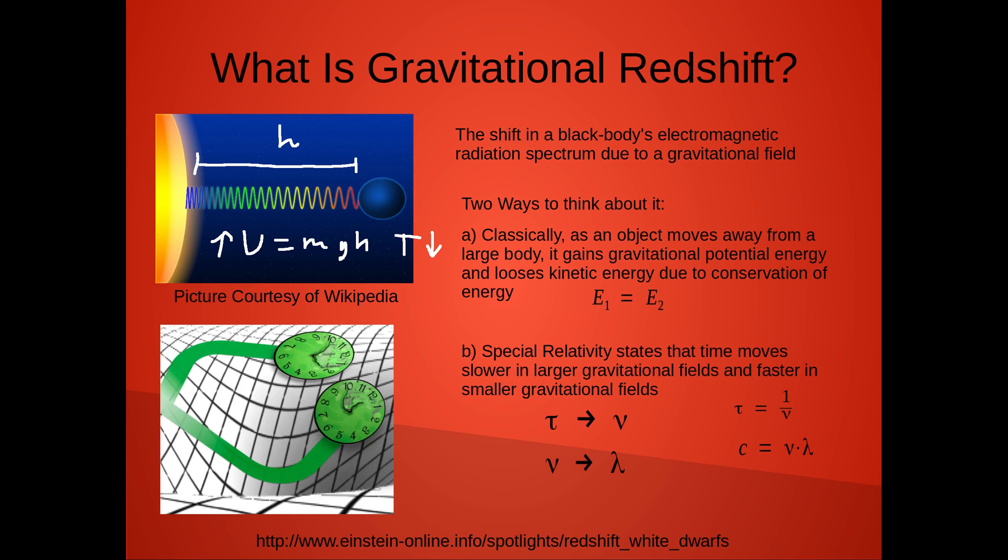Another way to look at it is through special relativity, which states that time moves slower in larger gravitational fields and faster in smaller gravitational fields. So if your photon moves from an area of high potential to low gravitational potential, time is effectively passing faster for it relative to itself.